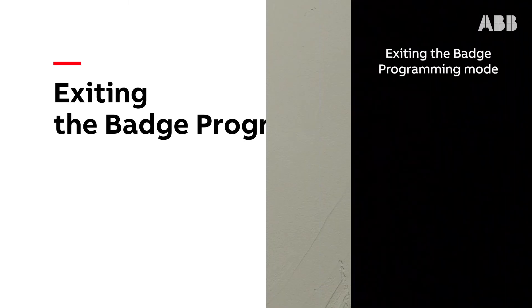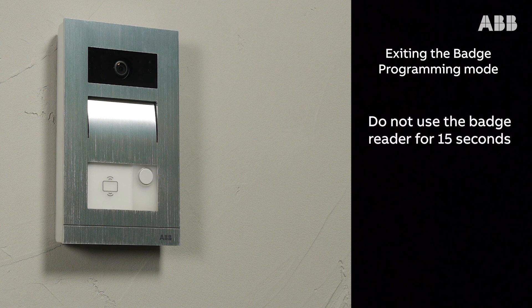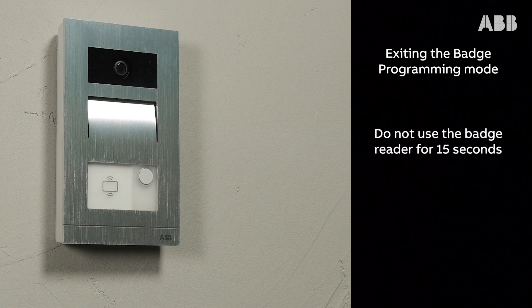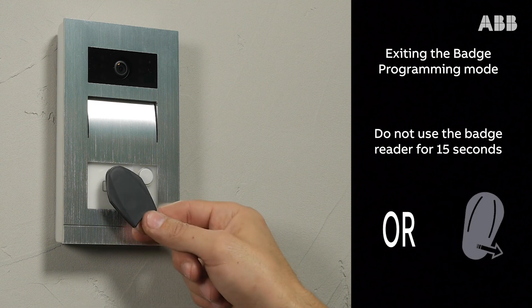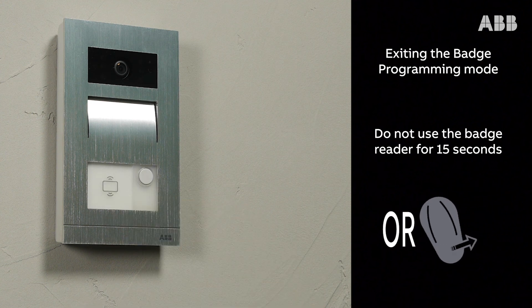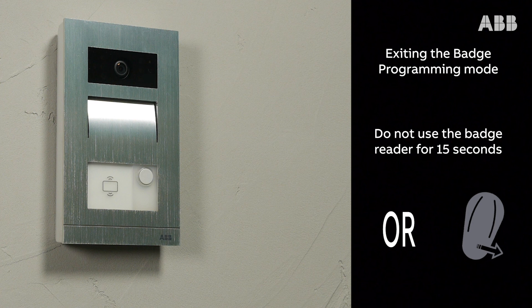You can exit the badge programming mode by not passing any badges in front of the badge reader for 15 seconds. To exit the badge programming mode directly, you can also pass the administrator badge once in front of the badge reader. Now you know how to manage badge programming.